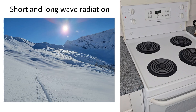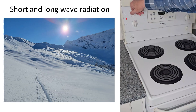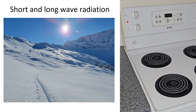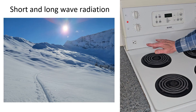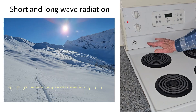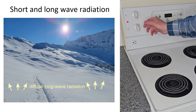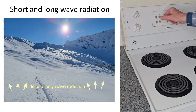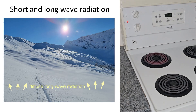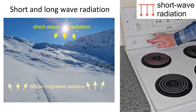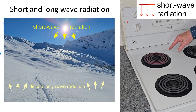Let's look at a stove element to see the difference between short and long wave radiation. At the medium setting, even after a couple of minutes, there is no visible light — no shortwave radiation coming from the element; there is only longwave radiation. Surfaces like snow, walls, clothing, and skin emit only longwave radiation. After turning the element to high and waiting a few minutes, it turns red because some of the emitted radiation is shortwave. Surfaces like the sun that are red hot or hotter emit shortwave radiation.